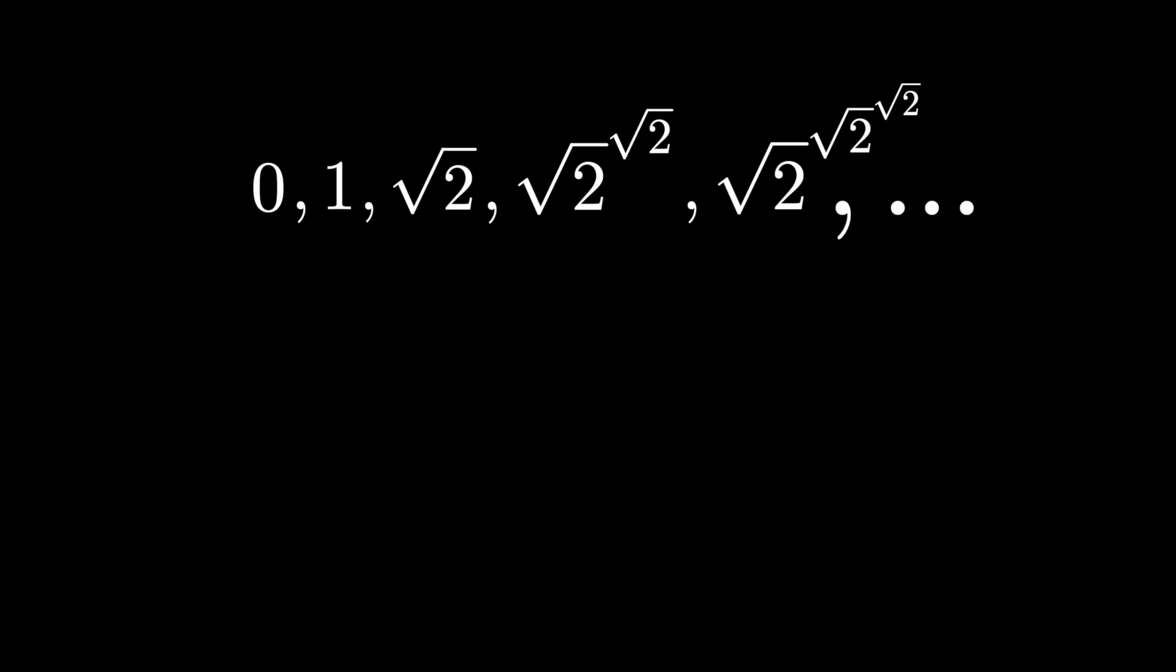This sequence represents our tower with the solution square root of 2, starting at 0, and with the recursion, a sub n plus 1 equals square root of 2 to the power of a sub n. That is, the next term is just square root of 2 to the power of the previous term.